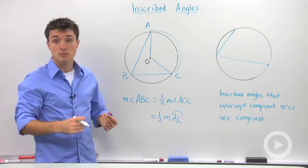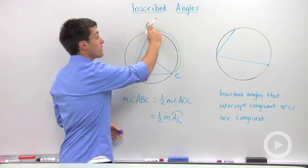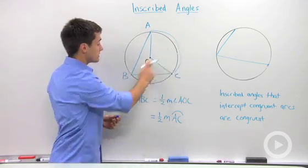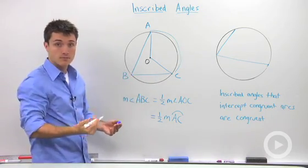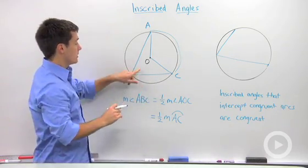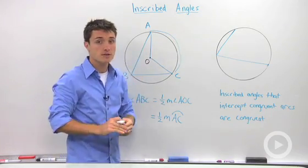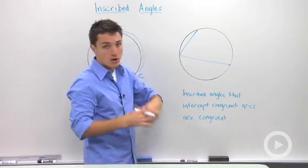Another way of saying that is in terms of the intercepted arc. If we have an intercepted arc AC, its measure is going to be twice as much as the inscribed angle. If I were to flip that around, the inscribed angle is going to be half of the intercepted arc.